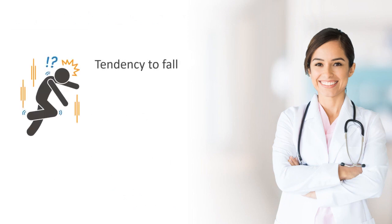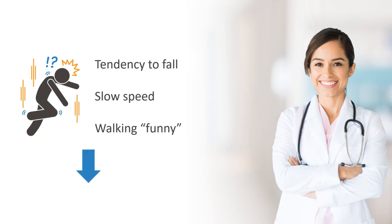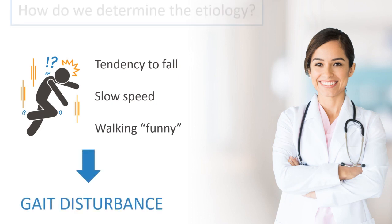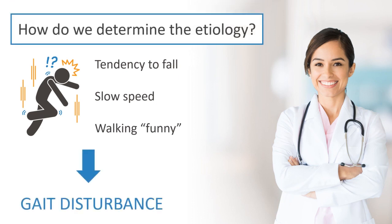The patient's particular comments, such as his tendency to fall while turning, slow speed, and walking funny, seem to suggest he has some sort of gait disturbance. How do we determine the etiology of our patient's gait impairment?